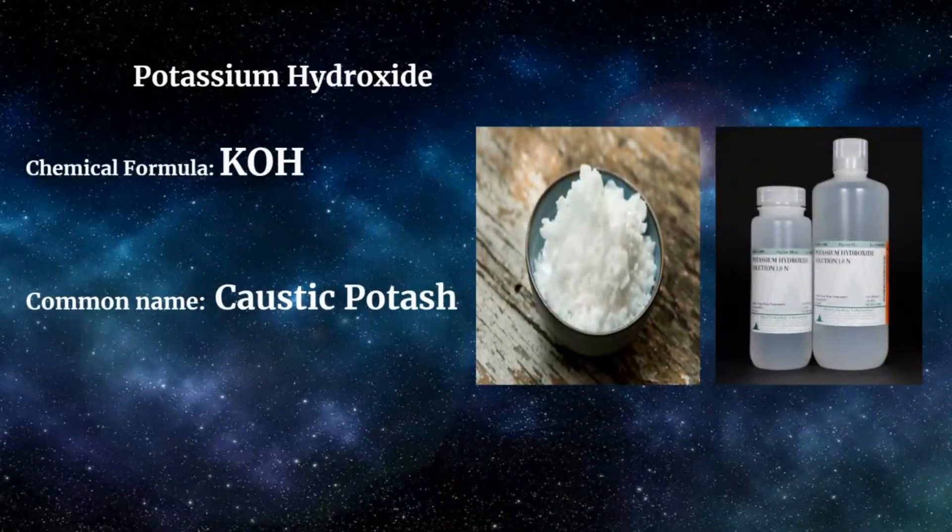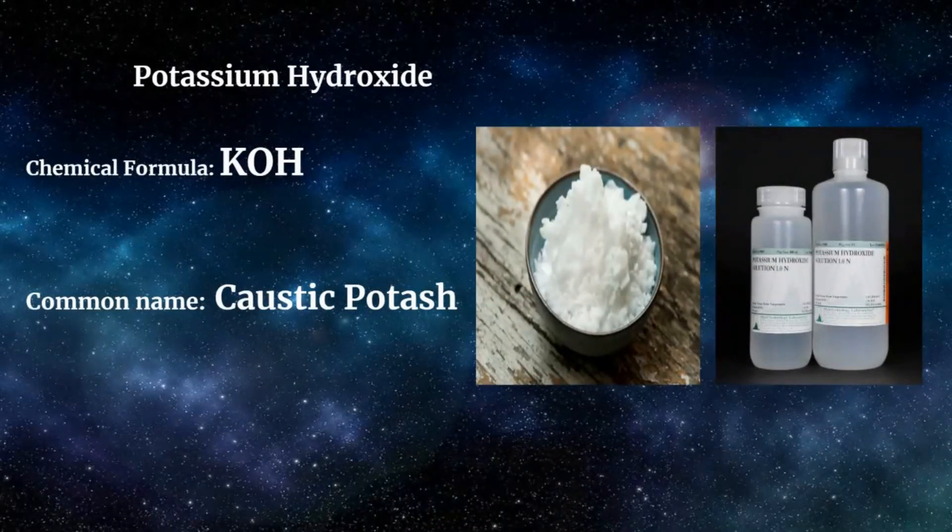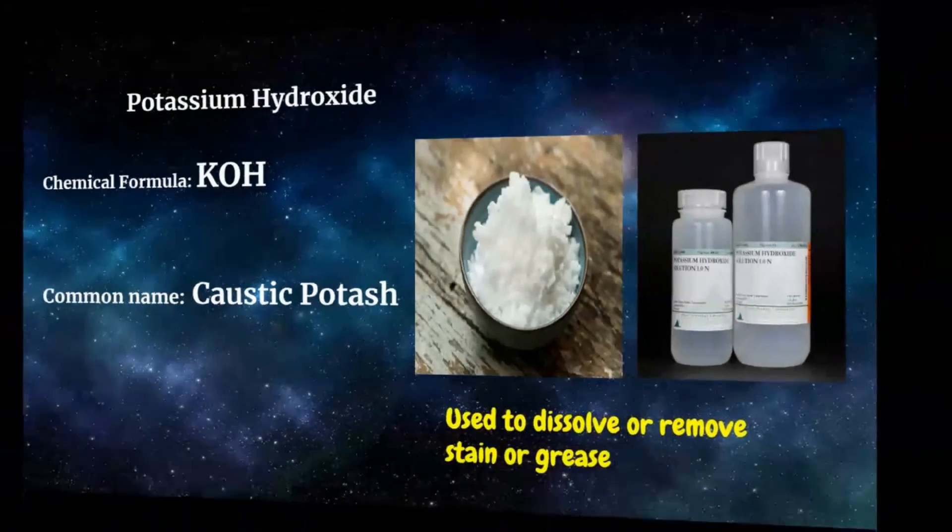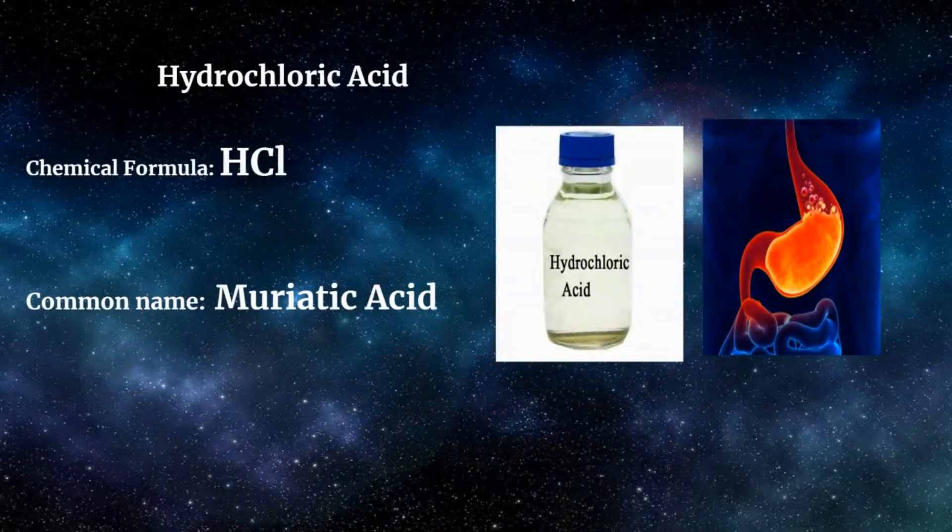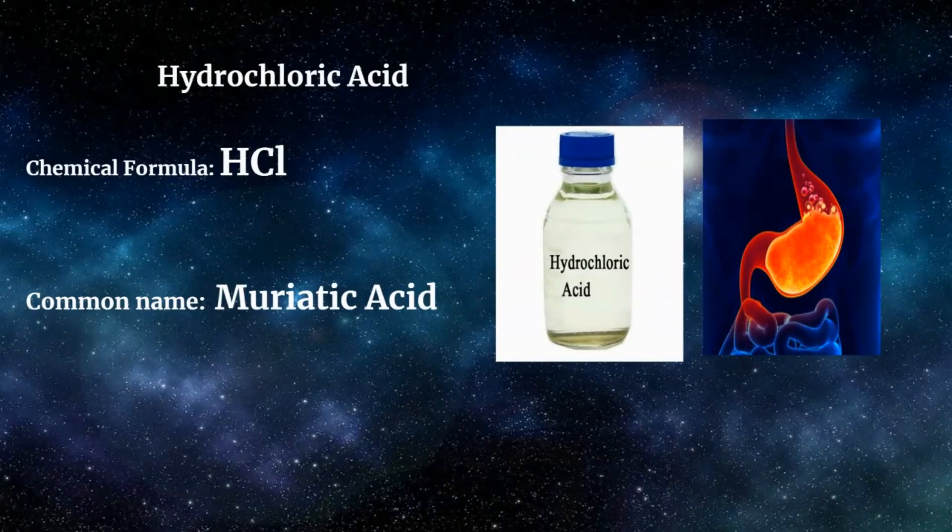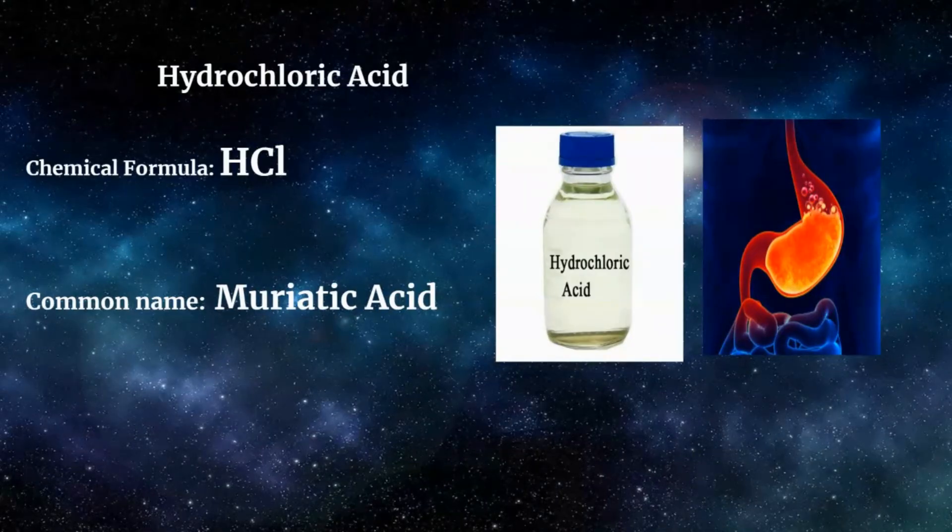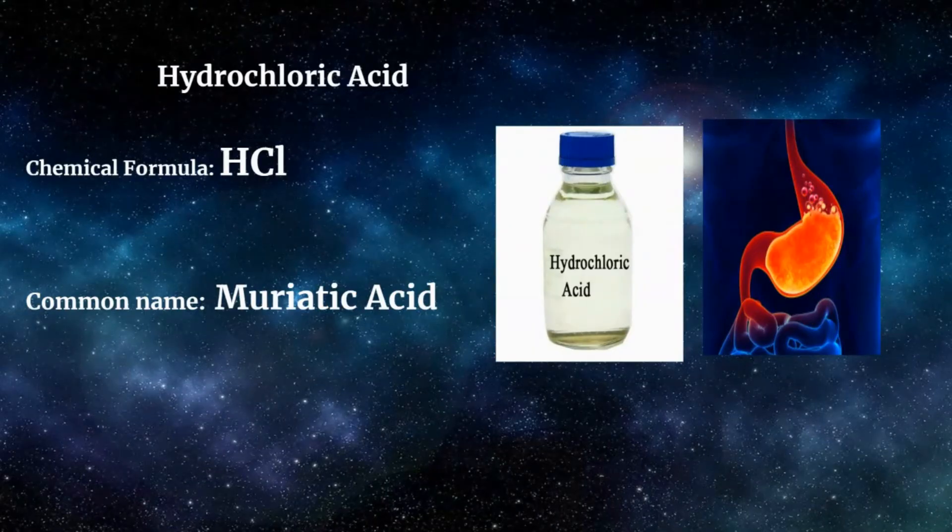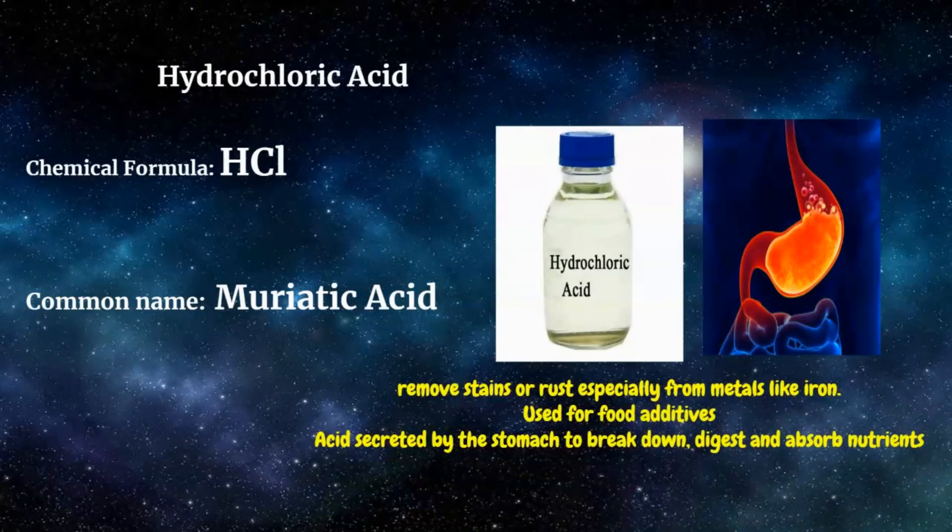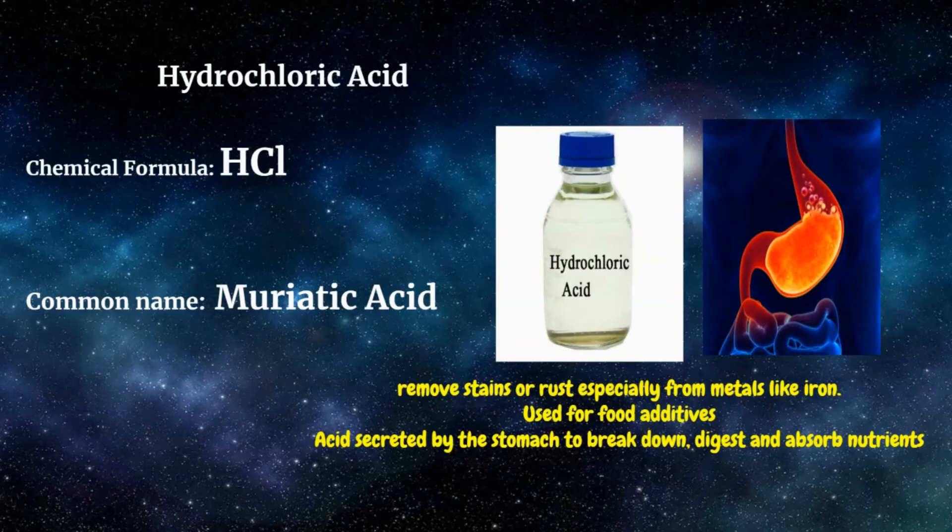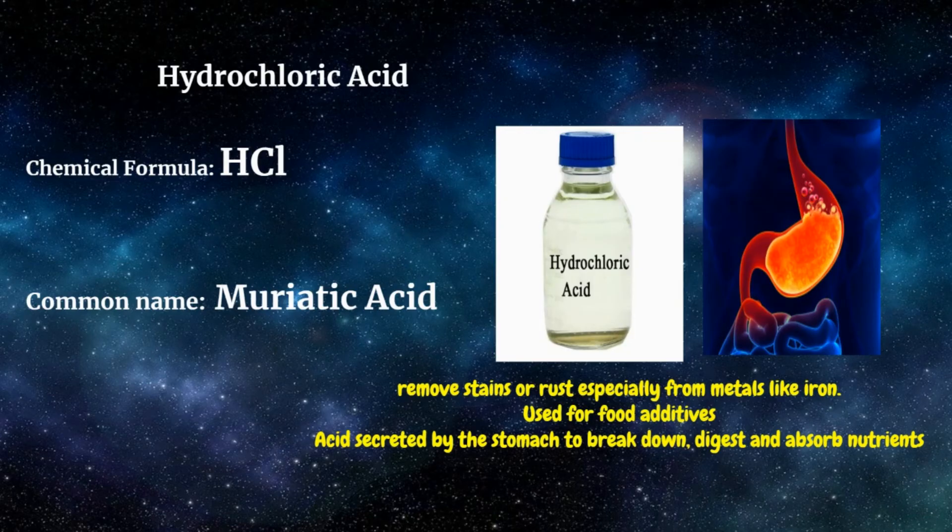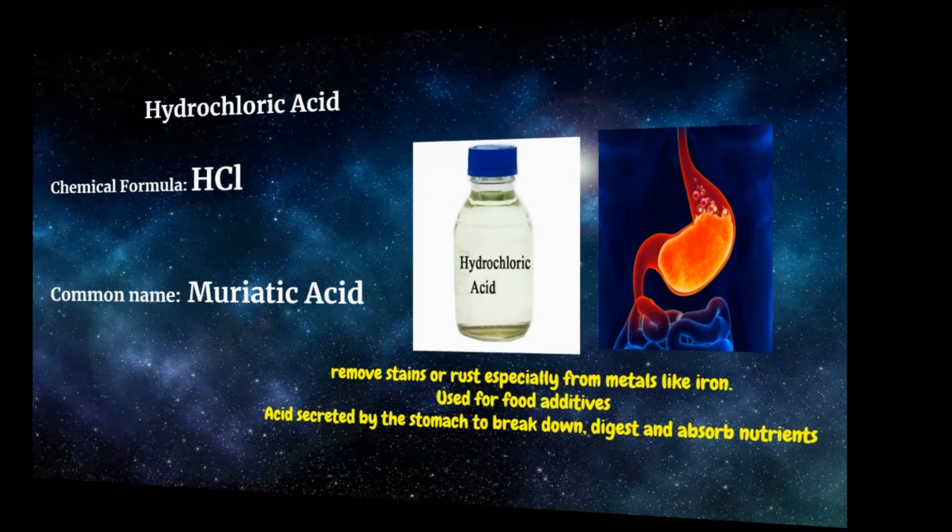Potassium hydroxide, or commonly called caustic potash. It is used to dissolve or remove stain or grease. Hydrochloric acid with chemical formula HCl, or what we call muriatic acid. It removes stains or rust especially from metals like iron. It is also used for food additives. And this acid is secreted by the stomach to break down, digest, and absorb nutrients.